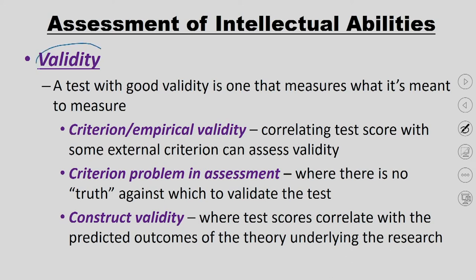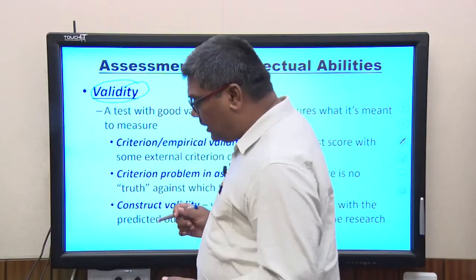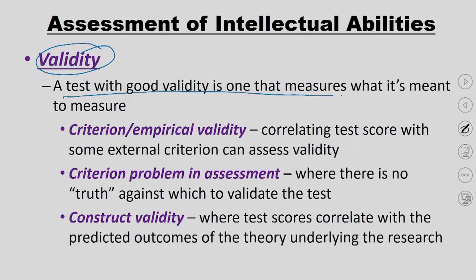Similar to reliability is another factor called validity. Reliability is how consistent and reproducible your test is. Validity is whether your test is measuring what it is supposed to measure. For example, if I have a test of happiness with questions like 'how many times did you cry today' or 'how often did you feel sad today,' these questions do not actually measure happiness. If a test does not measure what it is supposed to measure, it is said to have no validity. A test with good validity is the one which measures what it is meant to measure.